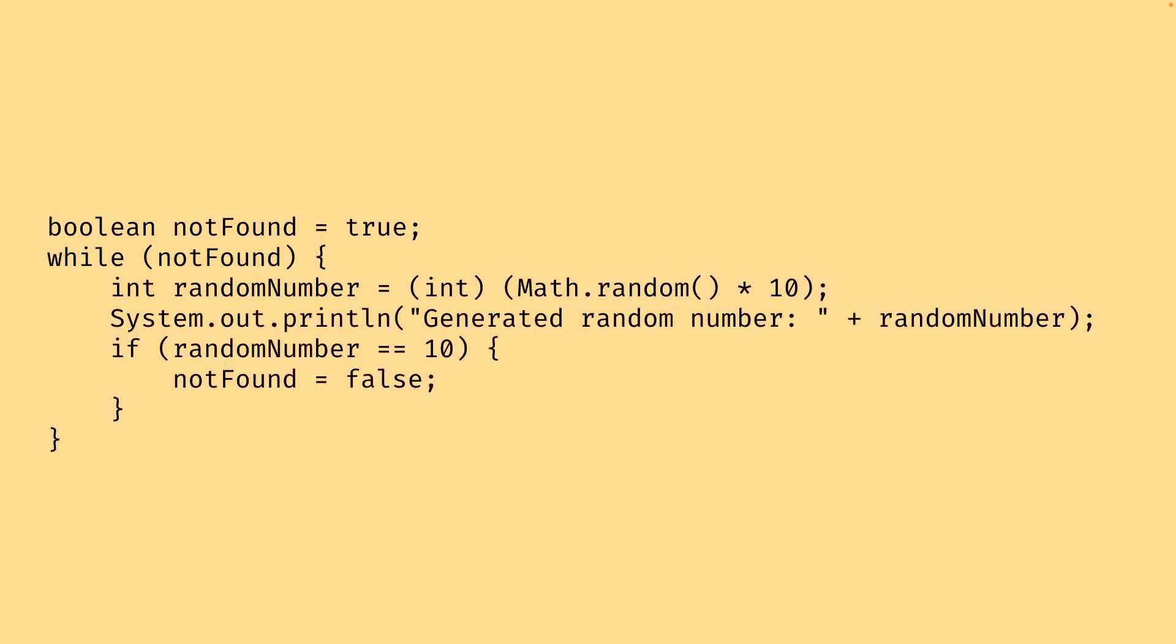Here's an example of a while loop that generates random numbers until a value of 10 is reached. In this example, the while loop will continue to generate random numbers and print them until a value of 10 is generated. Then the if statement will evaluate to true and notFound will become false. This causes the loop to terminate and the program to continue executing the code that follows the loop.